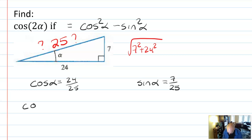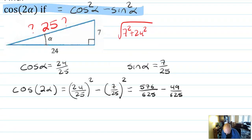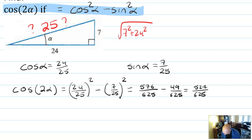So the cosine of alpha is adjacent over hypotenuse, and sine of alpha is opposite over hypotenuse. By the identity above, cosine of two times alpha is cosine squared alpha minus sine squared alpha. That gives us 24 squared over 25 squared minus 7 squared over 25 squared. That's 576 over 625 minus 49 over 625, which equals 527 over 625.